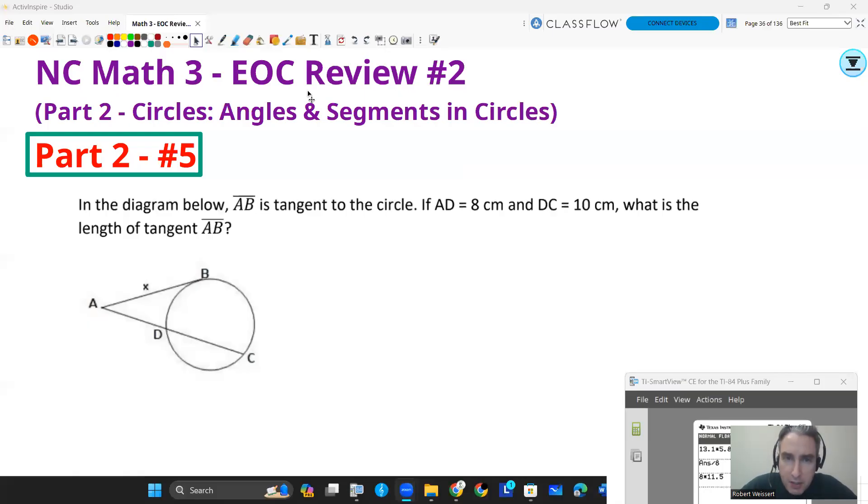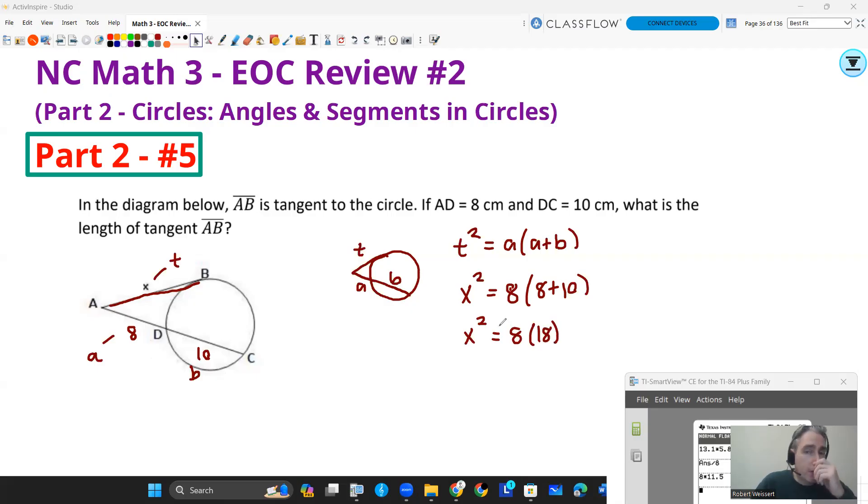Part two, number five. In the diagram below, AB is tangent, means it touches the circle, but doesn't go through. If AD is 8 centimeters, DC is 10 centimeters, what's the length of tangent AB? Well, let's mark what we have. So I'm going to put that AD 8 centimeters right there. And DC is going to be 10. And I want to know the length of tangent AB. And we might have a little formula to help us out. So the formula that I taught you with was, it would be like T, I think I call it A and B. And so the formula looks like tangent squared equals outer times whole, so A plus B. So that's kind of how it looks. So if I fit it into this formula, that T is going to be the tangent. That's going to be the X there. So I'll say X squared. A is going to be the outer. So it's going to be 8. And then parentheses, 8 plus 10. So that's how you set it up.